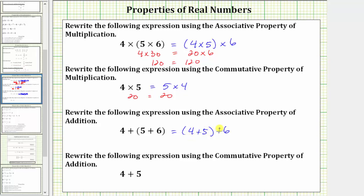Verifying this is true, we simplify both sides using the order of operations. On the left, we simplify five plus six first, which is 11, so the left side simplifies to four plus 11. On the right, we simplify four plus five first, which is nine, so the right side simplifies to nine plus six. Notice both sums are equal to 15.